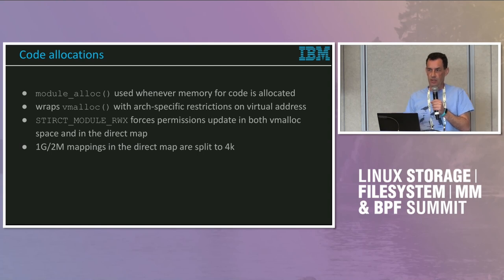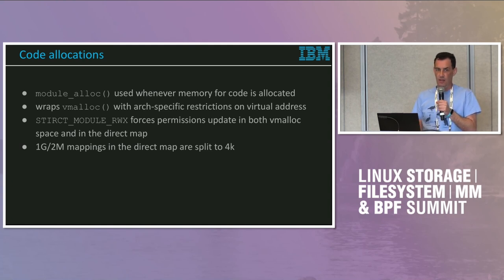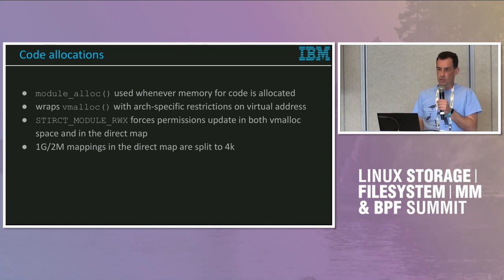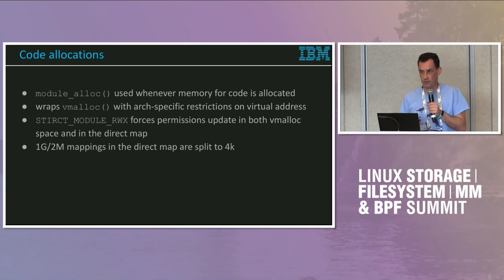Whenever module RWX is enabled, the memory allocated for the entire ELF image of the module — code, data, and everything else — is split into 4K chunks so that read-only data gets its read-only attributes, executable sections get read-execute, and so on. The attributes in the page tables are not only set in the vmalloc address space, but also in the direct map alias.